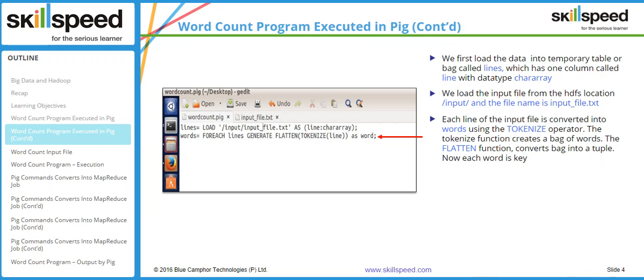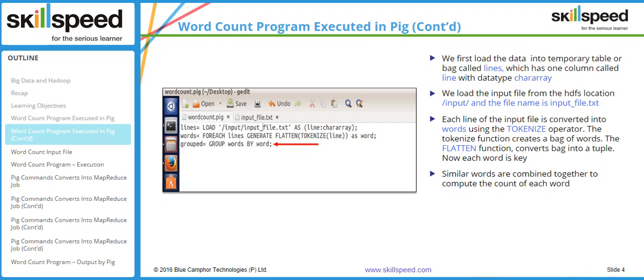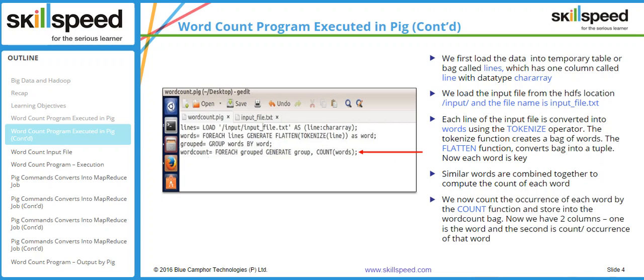It is a grouping operation where similar words are combined together to compute the count of each word. I am using the COUNT operator which is built into Pig. I define a new relation called 'word_count', and for each element in the previous relation — which is the grouped output — I generate the group and the count of words. The last line uses the DUMP operator to output the result.